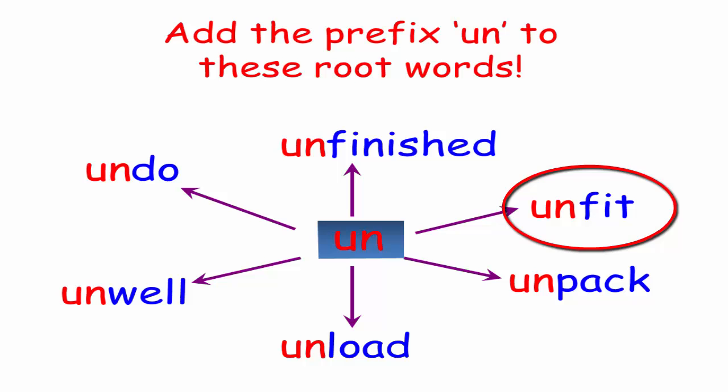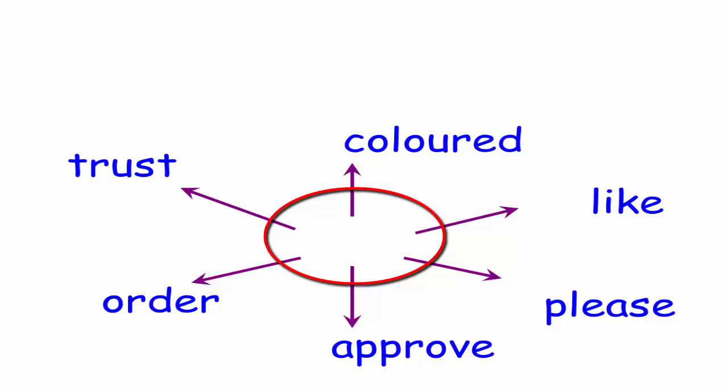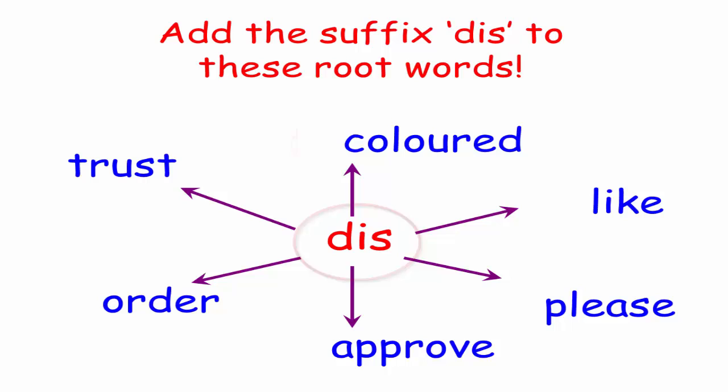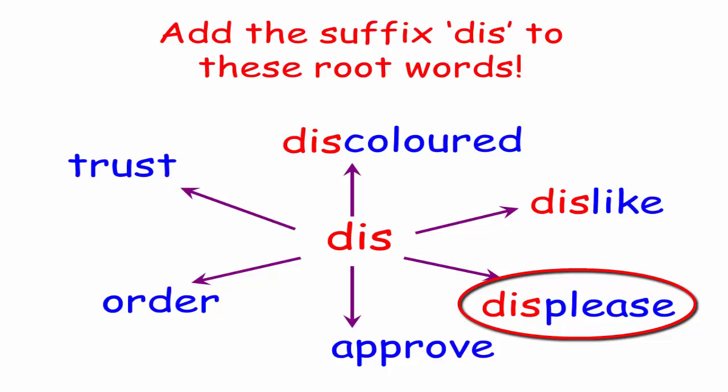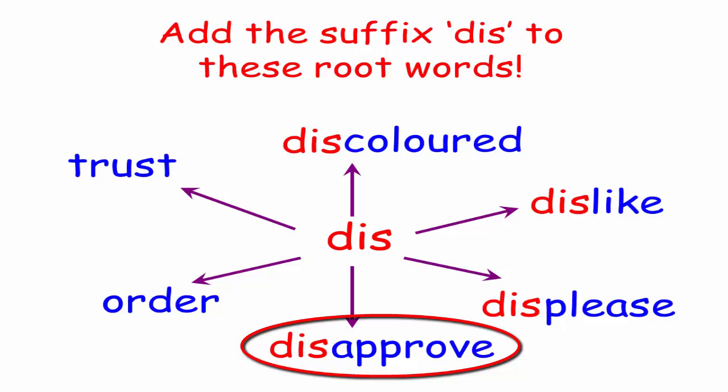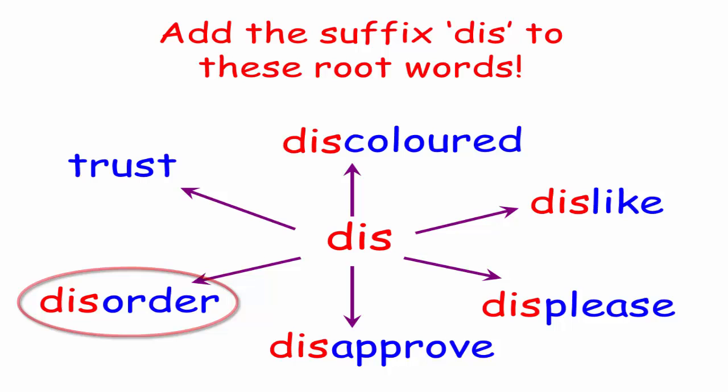What about these root words? What is the appropriate prefix that can be used? You are right. We are going to add dis. To say discolored, which means not colored. Dislike, which means hate. Displease, which is the opposite of please. Disapprove, which means does not approve. Disorder, which is the opposite of order. And distrust.